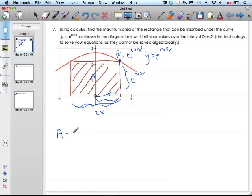it's 2x times my height, which is e to the cosine x. Base times height.